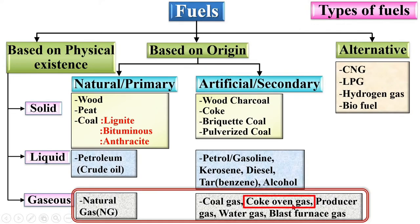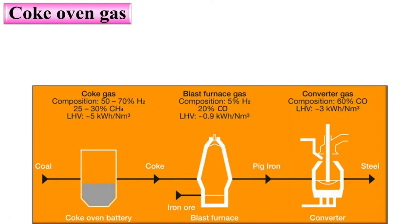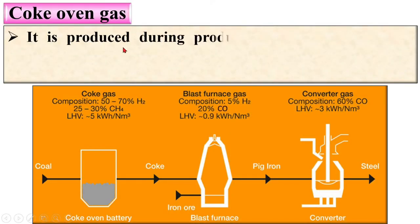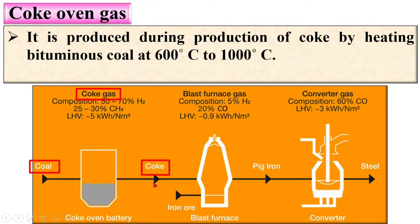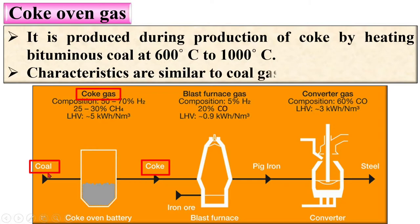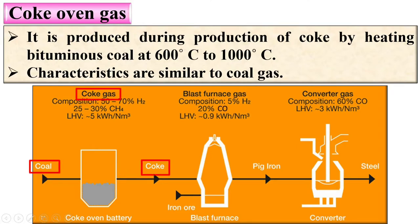The next type is coke oven gas. It is produced during the production of coke by heating bituminous coal at 600°C to 1000°C. When you produce coke from bituminous coal, coke oven gas is produced. Its characteristics are similar to coal gas.